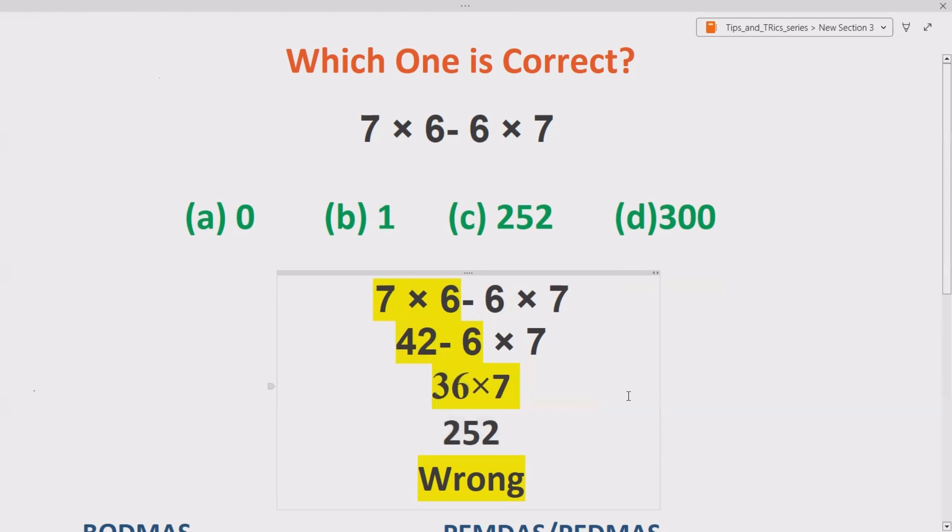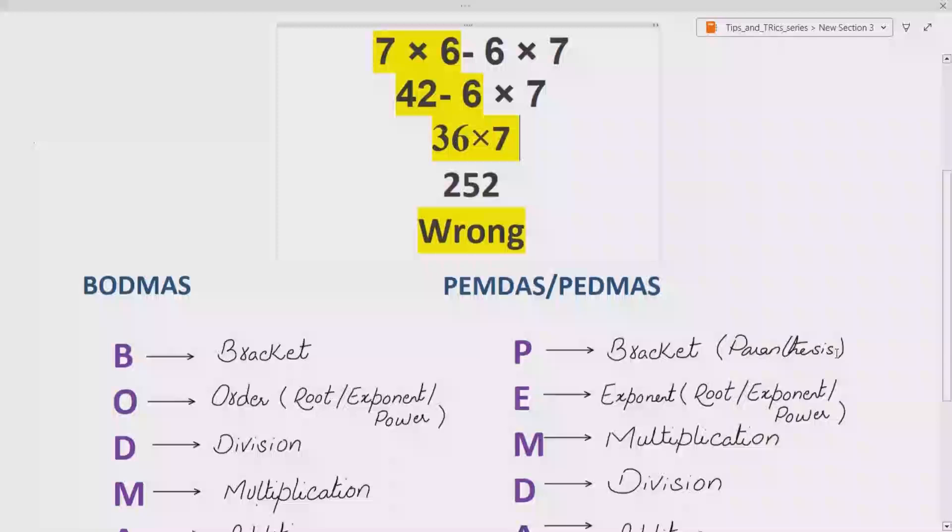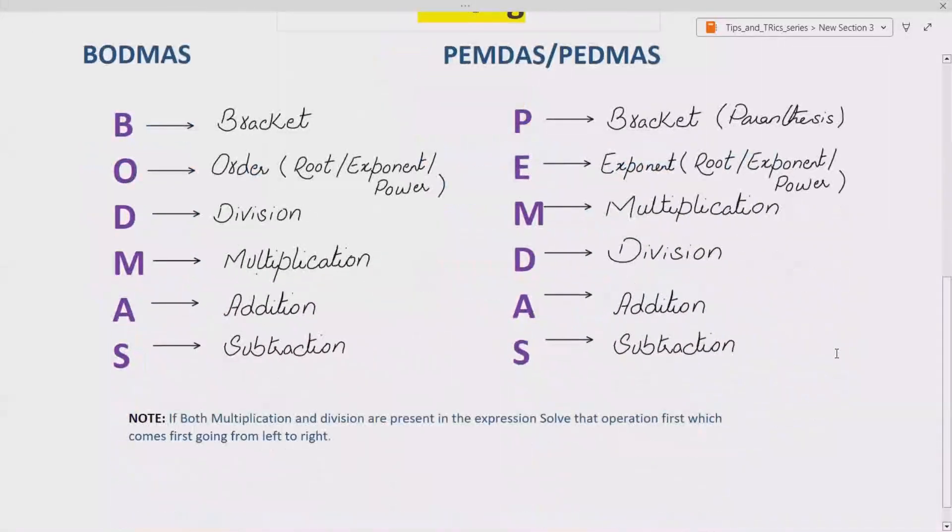Why wrong? Let's first see BODMAS/PEMDAS. BODMAS/PEMDAS are the rules to solve any arithmetic expression in mathematics. BODMAS says if you are given any arithmetic expression in mathematics, solve brackets, i.e., if there are any parentheses, solve them first. After that, solve order, i.e., exponents, then do division, multiplication, and then addition, subtraction.